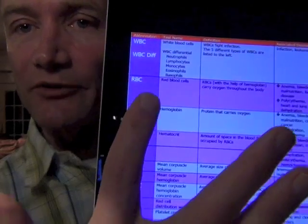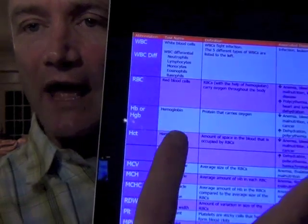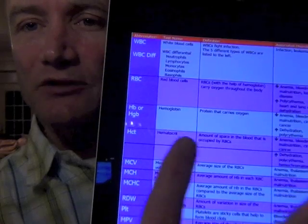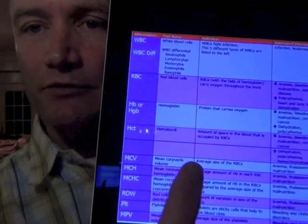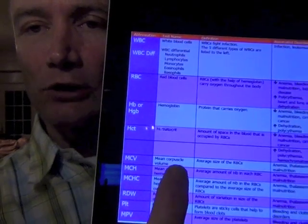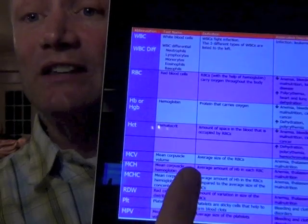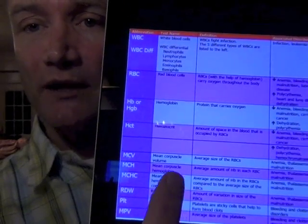And then there's the red blood cells. Are there enough red blood cells? And then the hemoglobin and hematocrit. That's really more about the percentage of the red blood cells in the blood. Is there enough there? And then looking at the size and shape of your red blood cells.